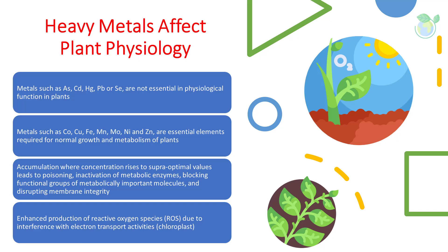The accumulation where internal concentration within the plant rises to superoptimal values leads to poisoning, inactivation of metabolic enzymes, blocking functional groups of metabolically important molecules, and disrupting membrane integrity. Moreover, the enhanced production of reactive oxygen species due to interference with electron transport activities at the chloroplast membrane functions in the light-capturing process.